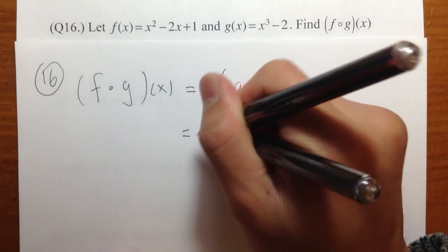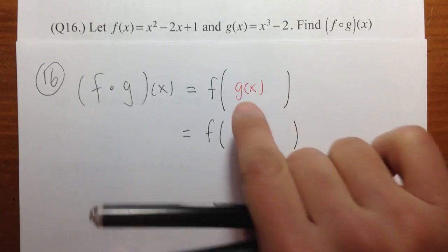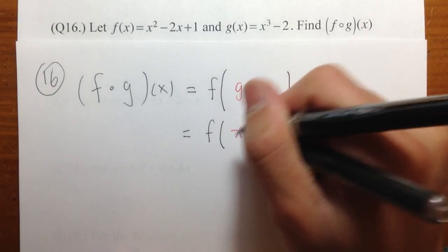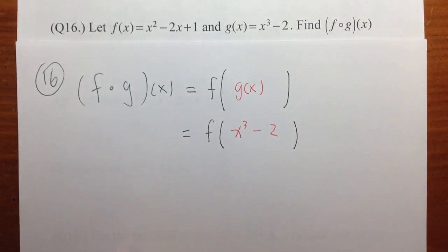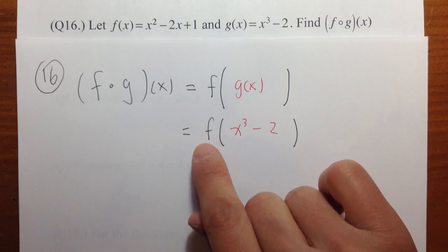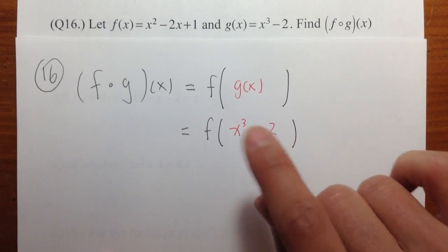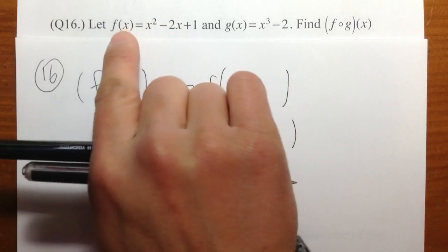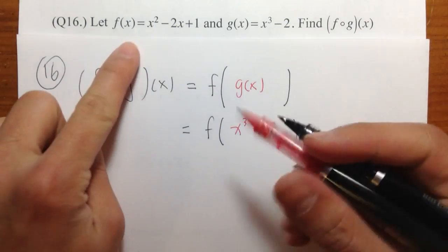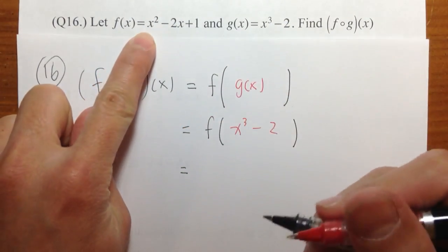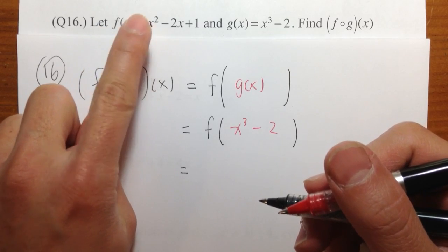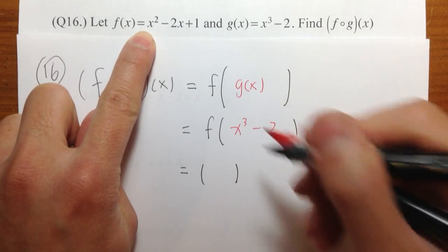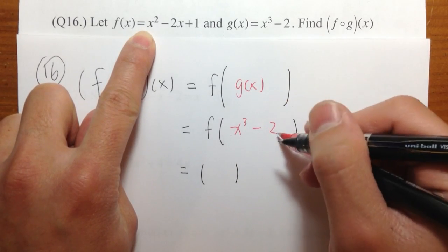So we are going to have f, and then the big parentheses. g of x — we know it's x to the third power minus two. So I'm going to replace x to the third power minus two for g. Then I need to do f of x to the third power minus two. What I need to do is take this and plug in to all the x's that I see in the function f. As we can see, f of x is equal to x squared. I see the x, so I'm going to put a parentheses and put in x to the third power minus two.